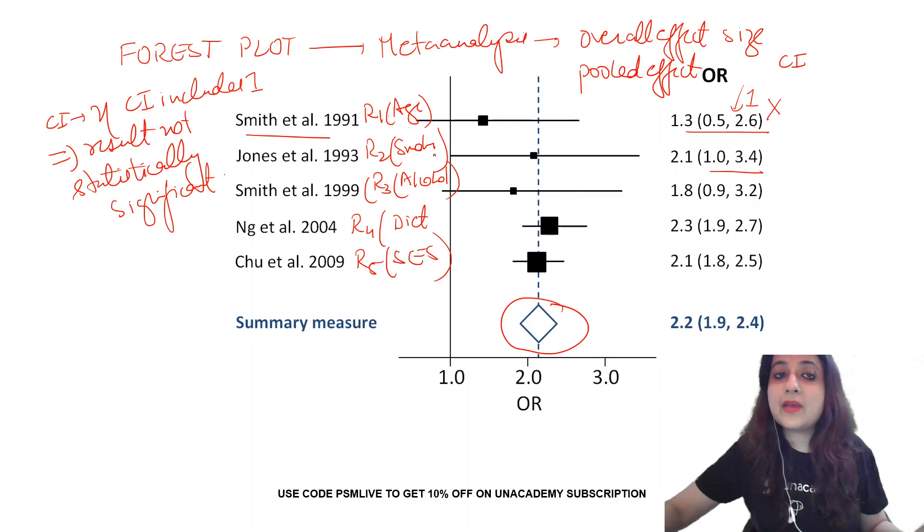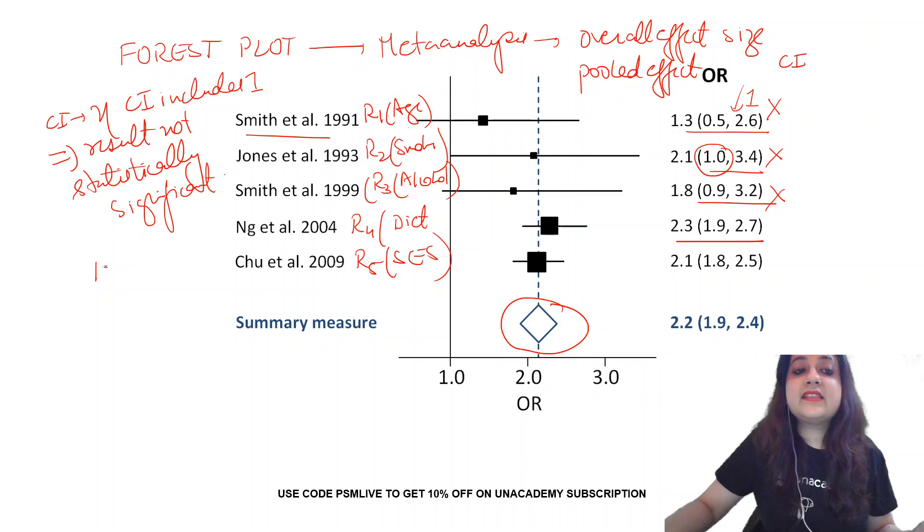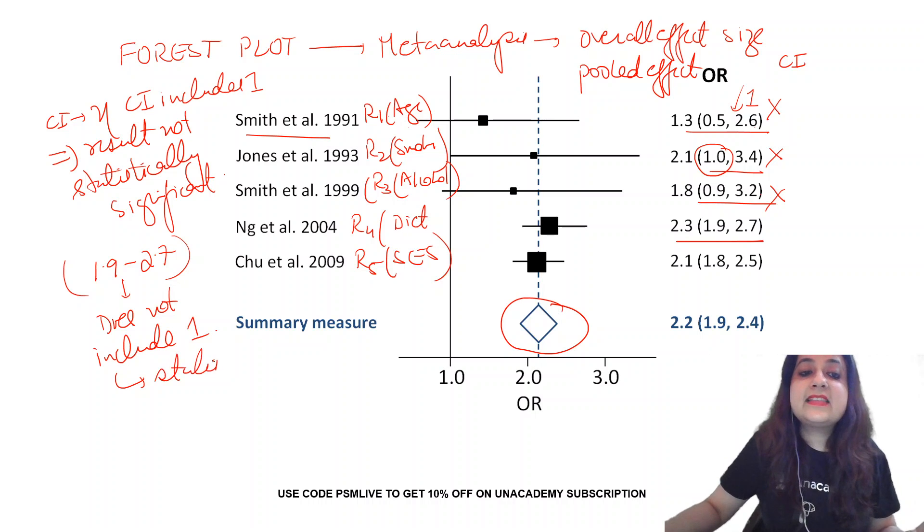Look at the next one, Jones et al., this also includes 1 in the interval, so not significant. Look at the third one, 0.9 to 3.2, not significant. Now look at the fourth one. When you are studying diet, the confidence interval is 1.9 to 2.7. So this does not include 1. When the CI does not include 1, it means it is statistically significant.